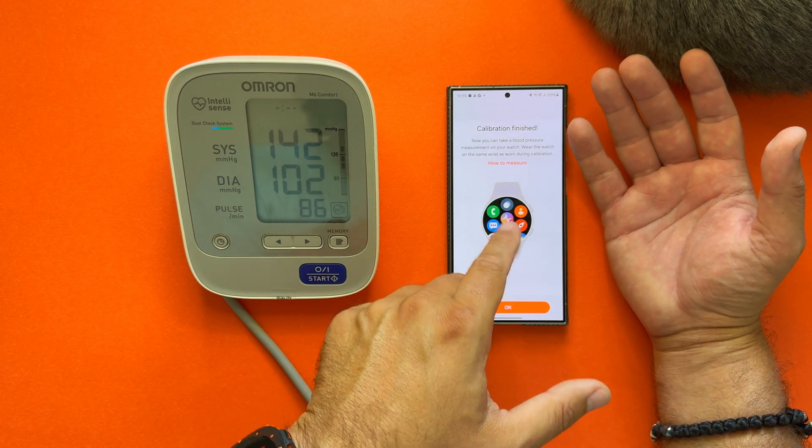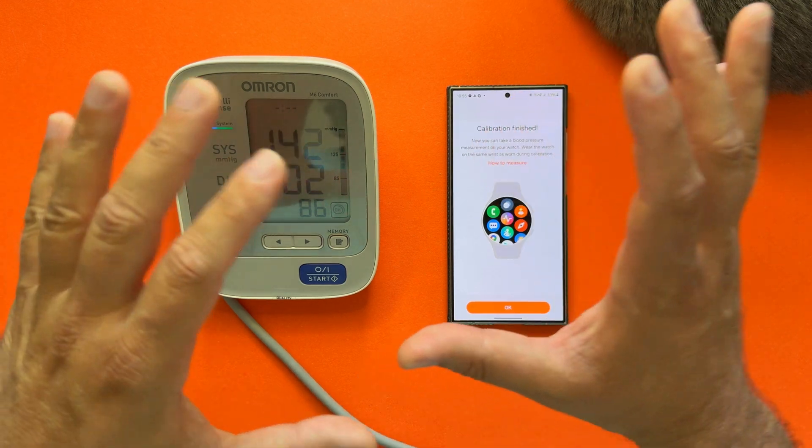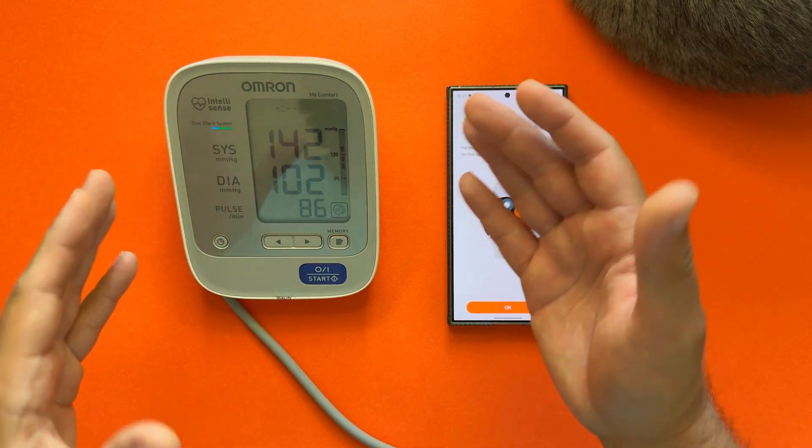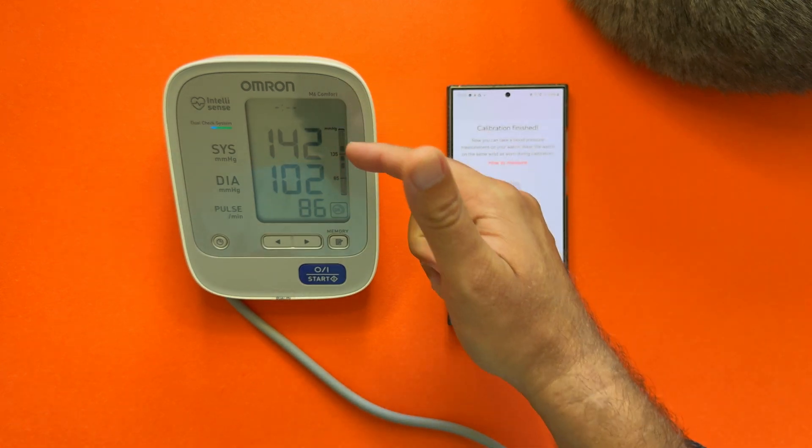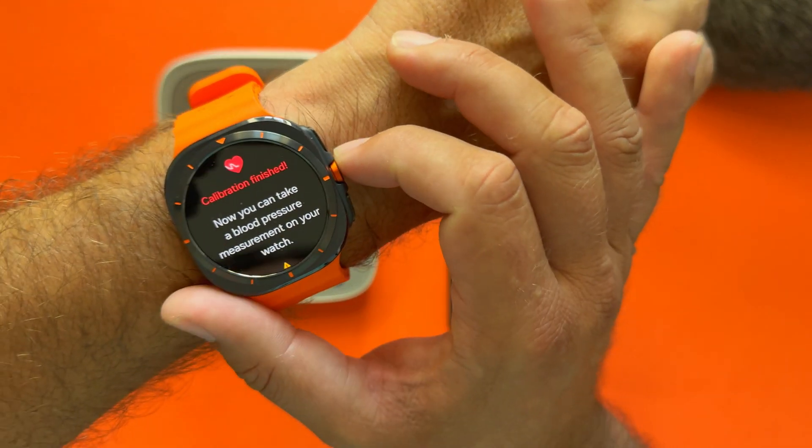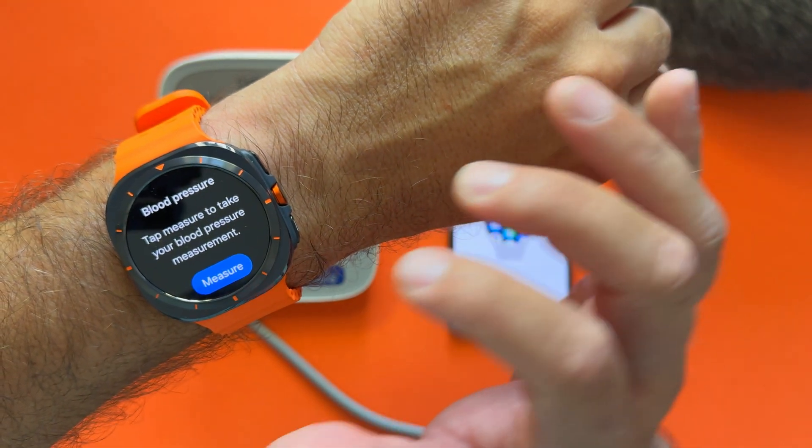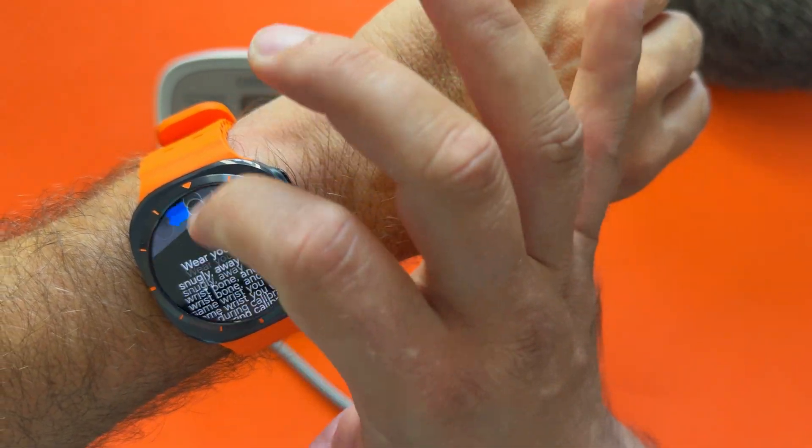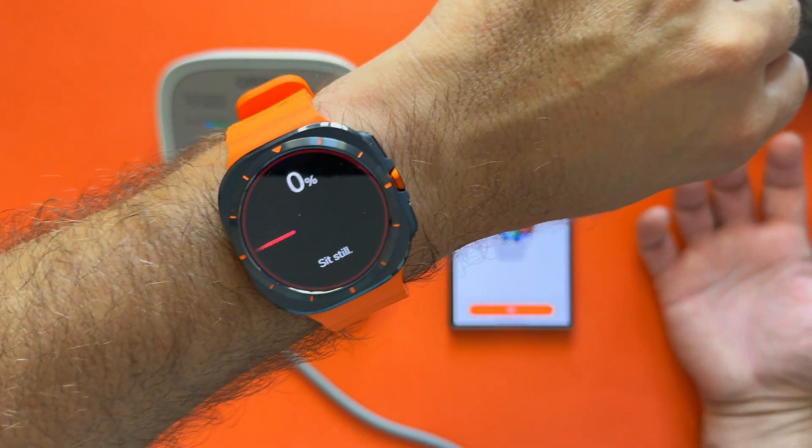Now I can take a blood pressure measurement on the watch. Wear the watch in the same wrist as worn during the calibration. As I have done this, I want to show you right off the bat: I'm going to do a measurement with the watch and then I'm going to do a measurement with the blood pressure monitor, and we're going to confirm if we're going to get the same readings. Let's press OK here. All right, now hit Measure. You're going to get this message after the calibration.